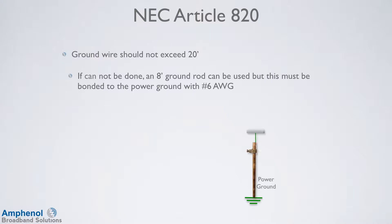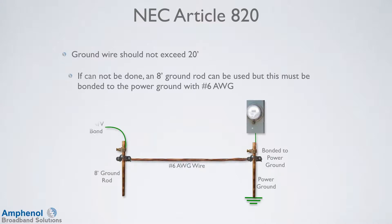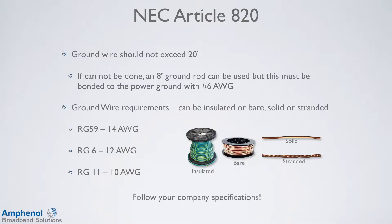Ground wires should not exceed 20 feet. If that can't be done, an 8-foot ground rod can be used, but this must be bonded to the power ground with a number 6 gauge wire. This is when a cable TV company would drive a ground rod on a residential or mobile home, but only on rare occasions. We'll show seven different bonding options later, and one of them should enable a ground wire of less than 20 feet. Ground wire can be insulated or bare, solid or stranded. For RG59 use 14 gauge wire, for RG6 use 12 gauge wire, and for RG11 use 10 gauge wire. Check with your company's installation standards for any more stringent requirements.